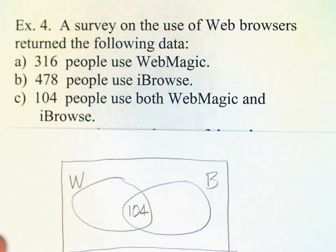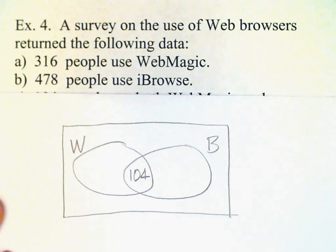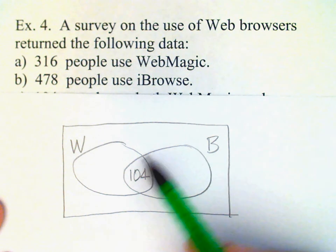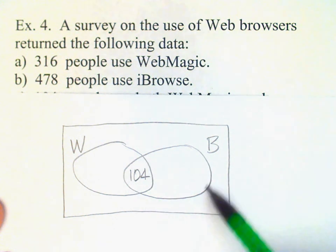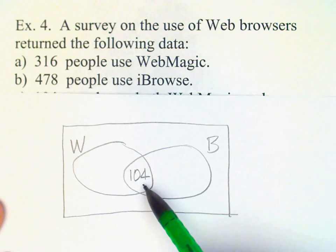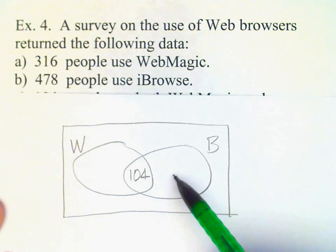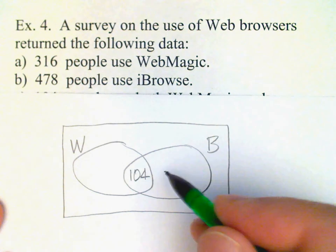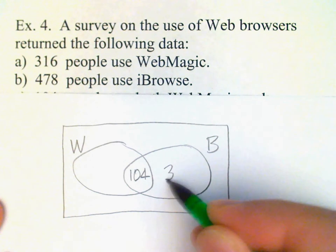The previous bit of information says 478 use Eyebrows, so that would be set B. But 104 are already in the intersection region, which means this region must have 478 minus 104, or 374.